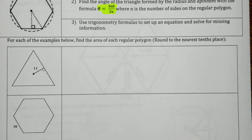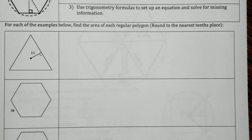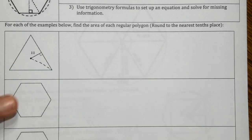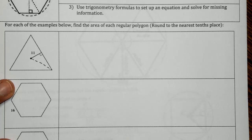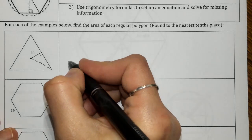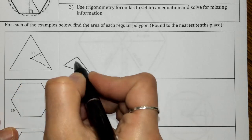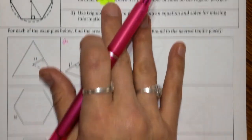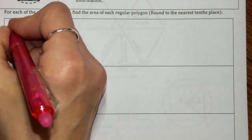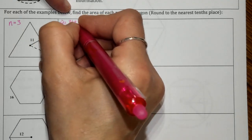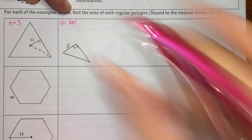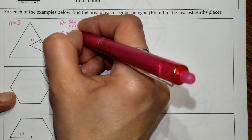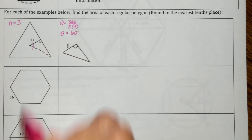Here we have a triangle and we're told the apothem is 11. We draw in one of our radii to create a right triangle. Taking this triangle off to the side — we have three sides, so we use 360 divided by two times n, where n equals 3. When we plug this into the calculator, our reference angle theta comes out to 60 degrees. So the reference angle at the top of our right triangle is 60 degrees.